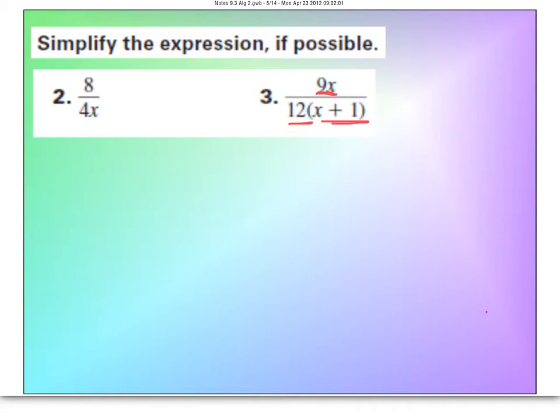However, number 2 we can do. This is basic chapter 6. The only simplification we can do is take a 4 out. So, 4 divided by 4 is 1. 8 divided by 4 is 2. So, what we're left here with is 2x and that's how you simplify monomials.